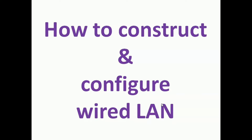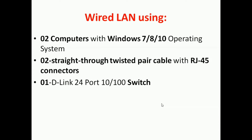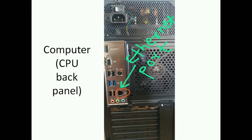Before starting, let's discuss which components or devices are required to construct this wired LAN. We require two computers with Windows 7, 8, 10, or any other OS. Then we require two straight-crimped twisted pair cables with RJ45 connectors on both ends. I am also using a D-Link 24-port 10/100 Mbps switch.